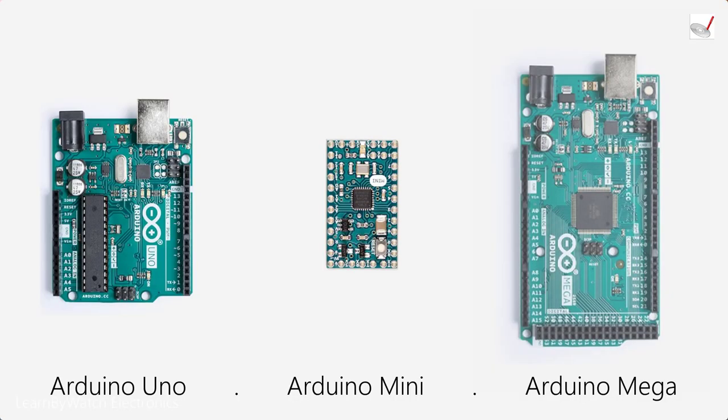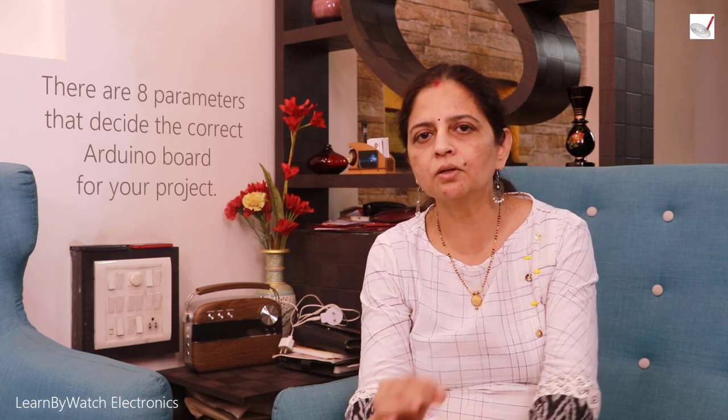Arduino boards are available in a vast spectrum depending on specifications. But for people who are just starting, we are going to focus on three simple boards which are most widely used currently: the Arduino Uno, Arduino Mini, and Arduino Mega. When selecting from these three boards, you should look at eight basic specifications.